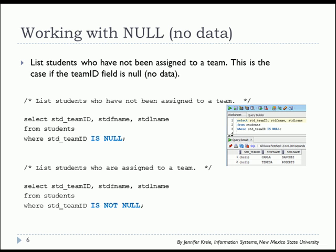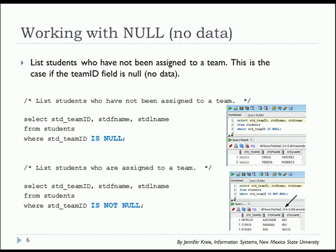A good way to cross-check that would be to list students who are assigned to a team. So we've just added the word NOT, as in IS NOT NULL. We see a partial output of 13. So we have two not assigned to a team, and 13 with a team assigned.